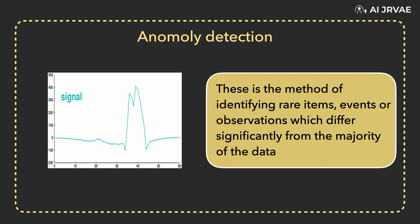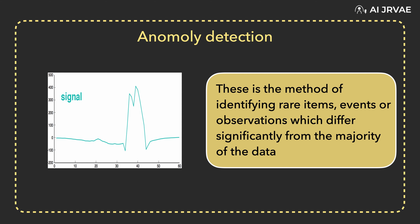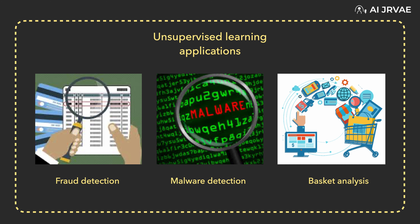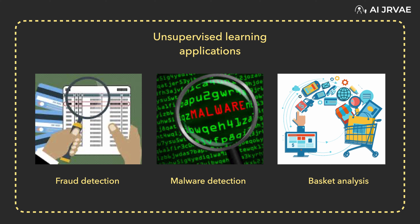The primary goal of clustering is to find similarities in the data points and group similar data points into a cluster. Anomaly detection is the method of identifying rare items, events, or observations which differ significantly from the majority of the data. We generally look for anomalies or outliers in data because they are suspicious. Some practical applications of unsupervised learning include fraud detection, malware detection, conducting accurate basket analysis, etc.